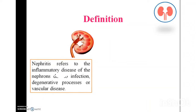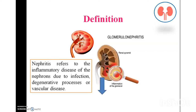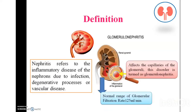Some inflammation and infection occurring in the nephron leads to nephritis. Nephritis refers to the inflammatory disease of the nephrons due to infection, degenerative processes or vascular diseases. Infections also affect the capillaries of the glomeruli, and this disorder is termed as glomerulonephritis. The normal glomerular filtration rate is 125 ml per minute, and below this level occurs in nephritis.